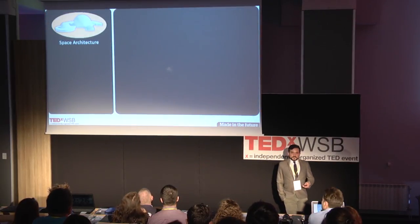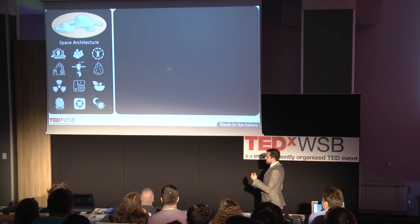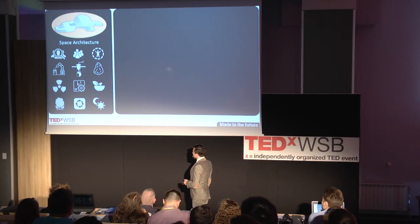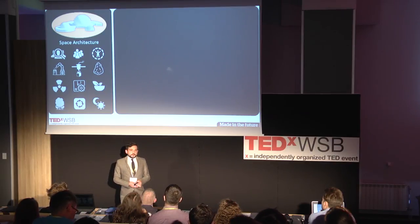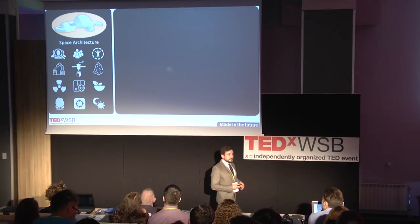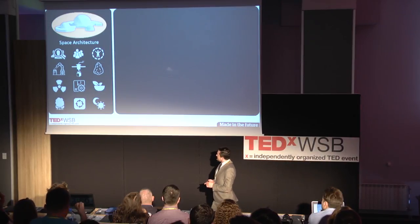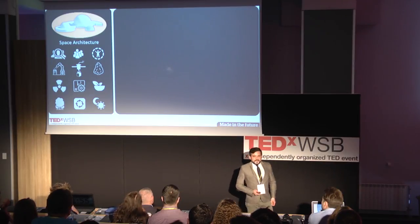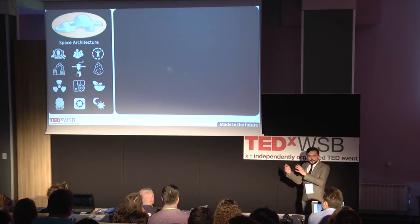Now you know some basics about space architecture. You know it involves a lot of isolation studies and a lot of human-related studies. You know it's about technology that could build your future homes and protect you from the outside environment. It's also about creating artificial biomes and life support systems that could replenish your water and oxygen, and about creating artificial day and night cycles. And now I should probably show you how to implement those aspects beyond Earth.